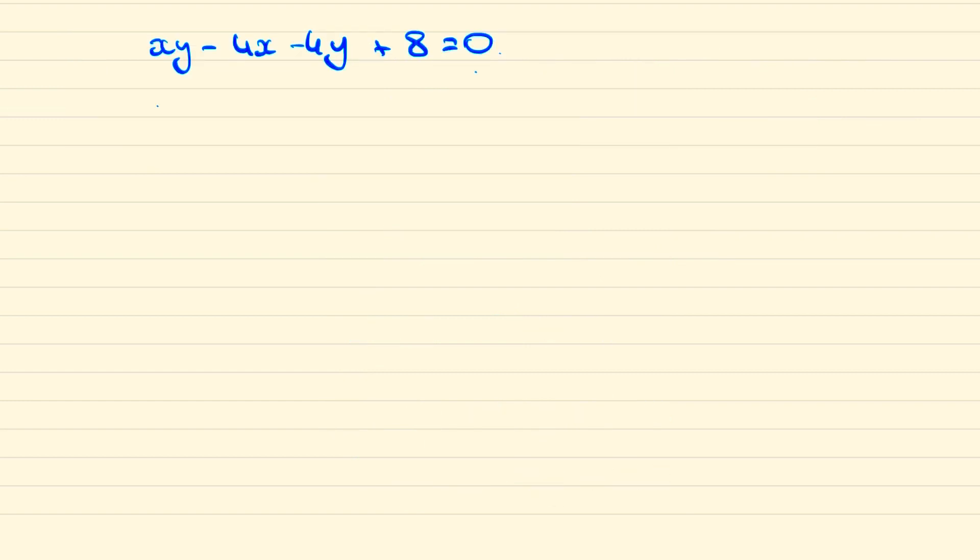We can factorize this equation as x minus 4 times y minus 4 minus 16 plus 8 equals 0, or in other words x minus 4 times y minus 4 is equal to 8.